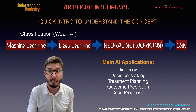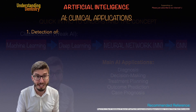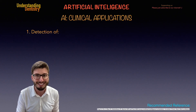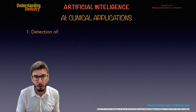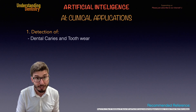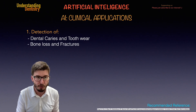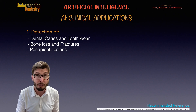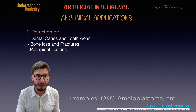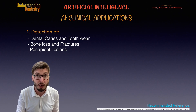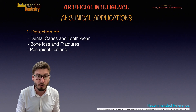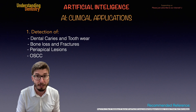Let's see the details of each application, starting with the detection of alterations. I'm recommending the literature review shown on screen as a reference covering all these applications. We can detect dental caries, tooth wear, and even incorrect restorations. Then we have bone loss and fractures, detection of periapical lesions, and even the odds for each differential diagnosis. The last category would be pre-malignant and malignant lesions, such as oral squamous cell carcinoma (OSCC).